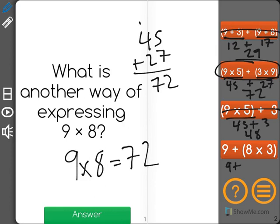And the last one is 9 plus 8 times 3, which is 24. Well, 9 plus 24 is 33. That's not right.